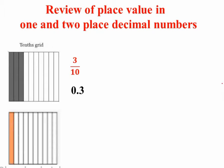Look at this grid. Here the square is divided into 10 equal parts. The colored part shows 1 by 10 of the square. And we can write this in decimal form as 0.1.